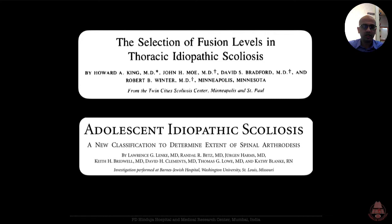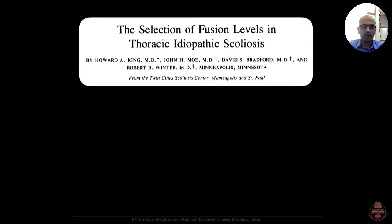The 1983 publication by King and the 2001 publication by the Lenke group form the basis of our understanding of this common spinal deformity. The selection of fusion levels for AIS was an area of controversy leading up to this paper. There were many propositions, however most conceded that the fusion area in the thoracic pattern curve must include all the vertebrae within the measured curve, but more detailed study covering different types of curve patterns was lacking.